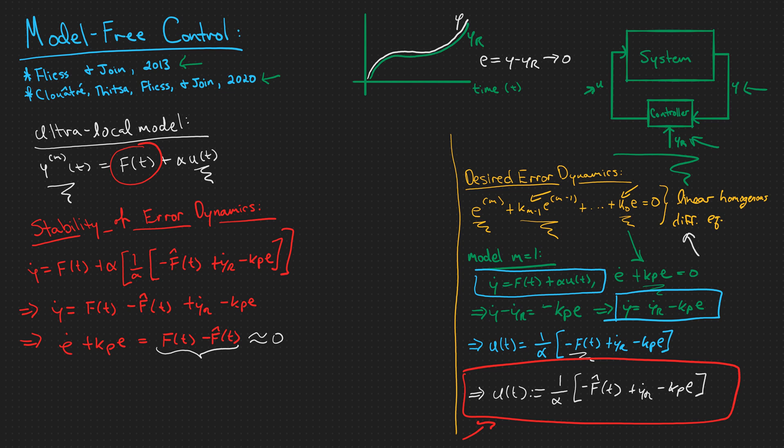And that would just mean that f hat of t needs to be a good approximation of f of t. And that's no big deal because we know that the smaller the time window we have when we derived our approximation f hat of t, the closer to f of t that we get.